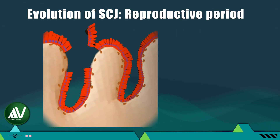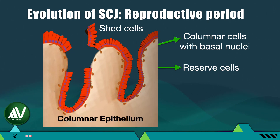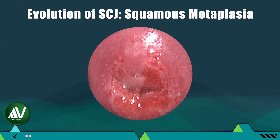The endocervical single-layer lining has one characteristic feature — a drawback, if I may call it — which has an important bearing on the formation of the transformation zone. The columnar cells are shed very easily; the slightest trauma or friction can cause sheets of columnar cells to be detached and lost. When exposed to the acidic environment of the vaginal secretions, the fragile columnar epithelium of the ectropion breaks down and is shed.